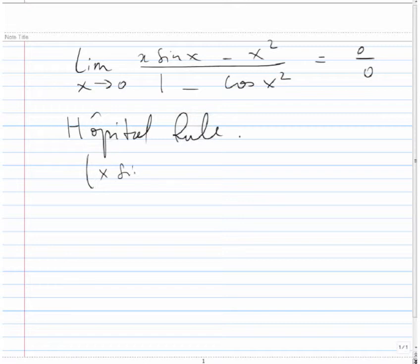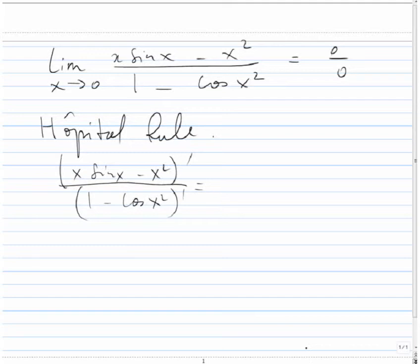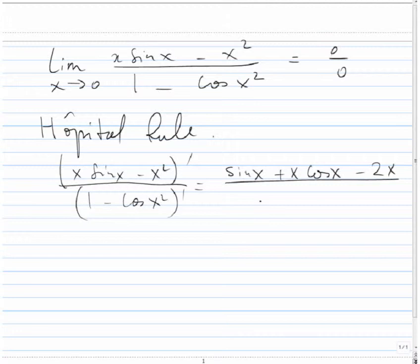We need to take the derivative of the top over the derivative of the bottom. The derivative of the top has x·sin(x), so we use the product rule: derivative of x is 1 times sin(x), plus x times derivative of sin(x), which is cos(x), minus 2x. The derivative of cos(x²) uses the chain rule, giving minus 2x·sin(x²), which becomes plus 2x·sin(x²).